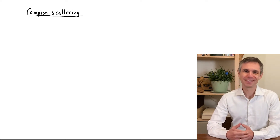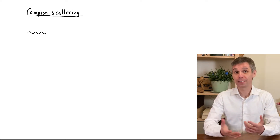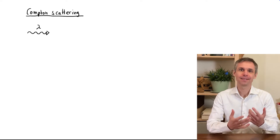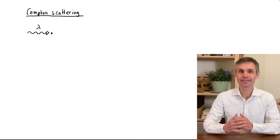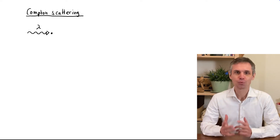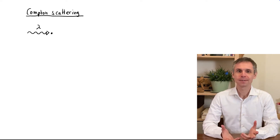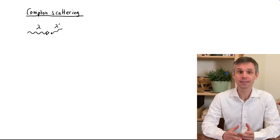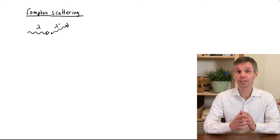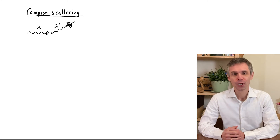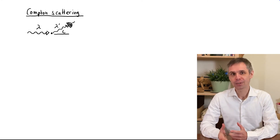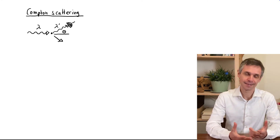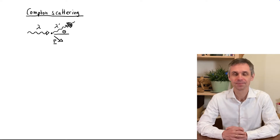Compton scattering occurs when light of a relatively short wavelength is scattered by an electron at rest. In this process, the wavelength of the light changes by an amount that depends on the deflection angle theta, while the electron acquires a momentum P, as indicated in the sketch here.